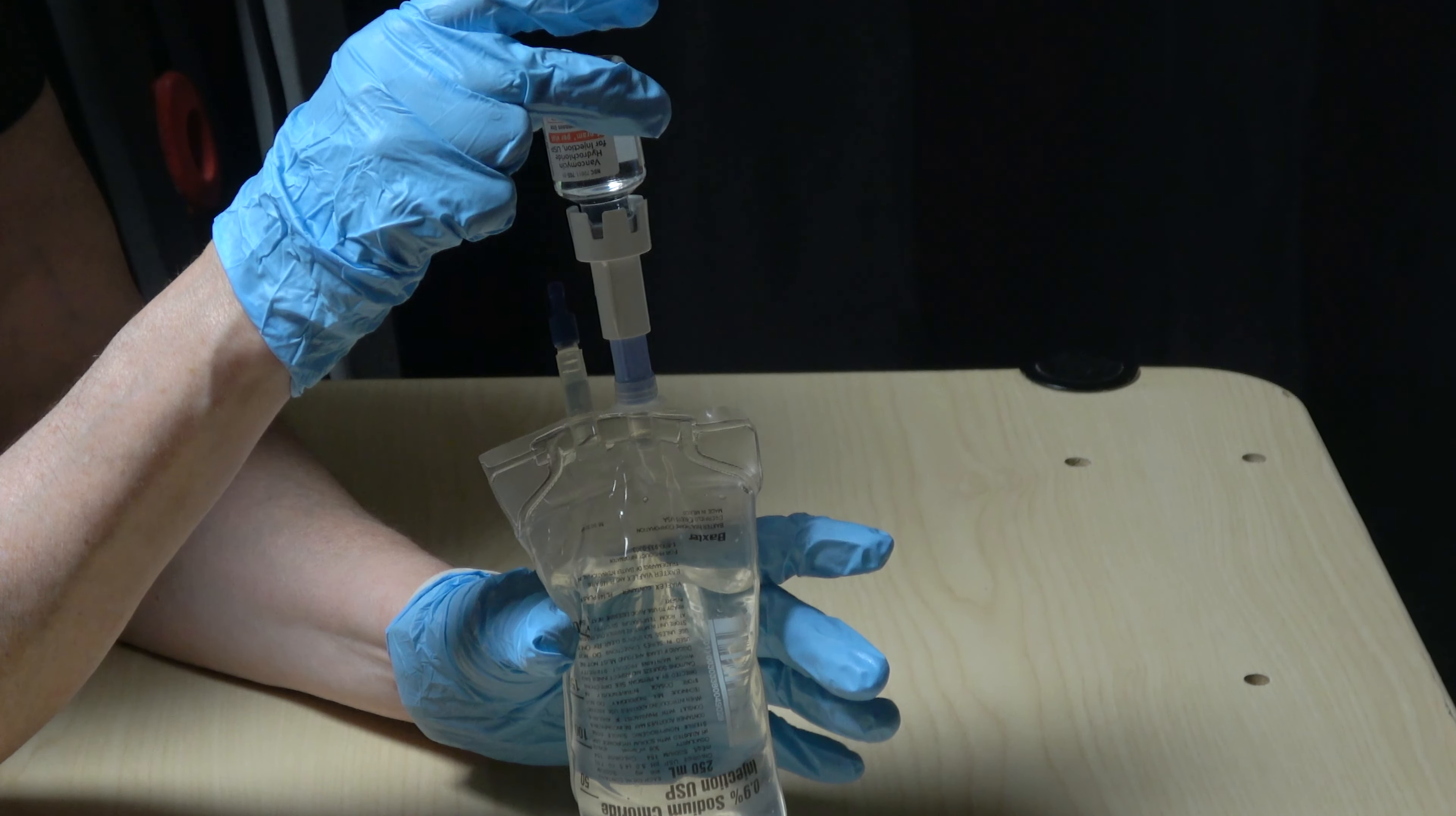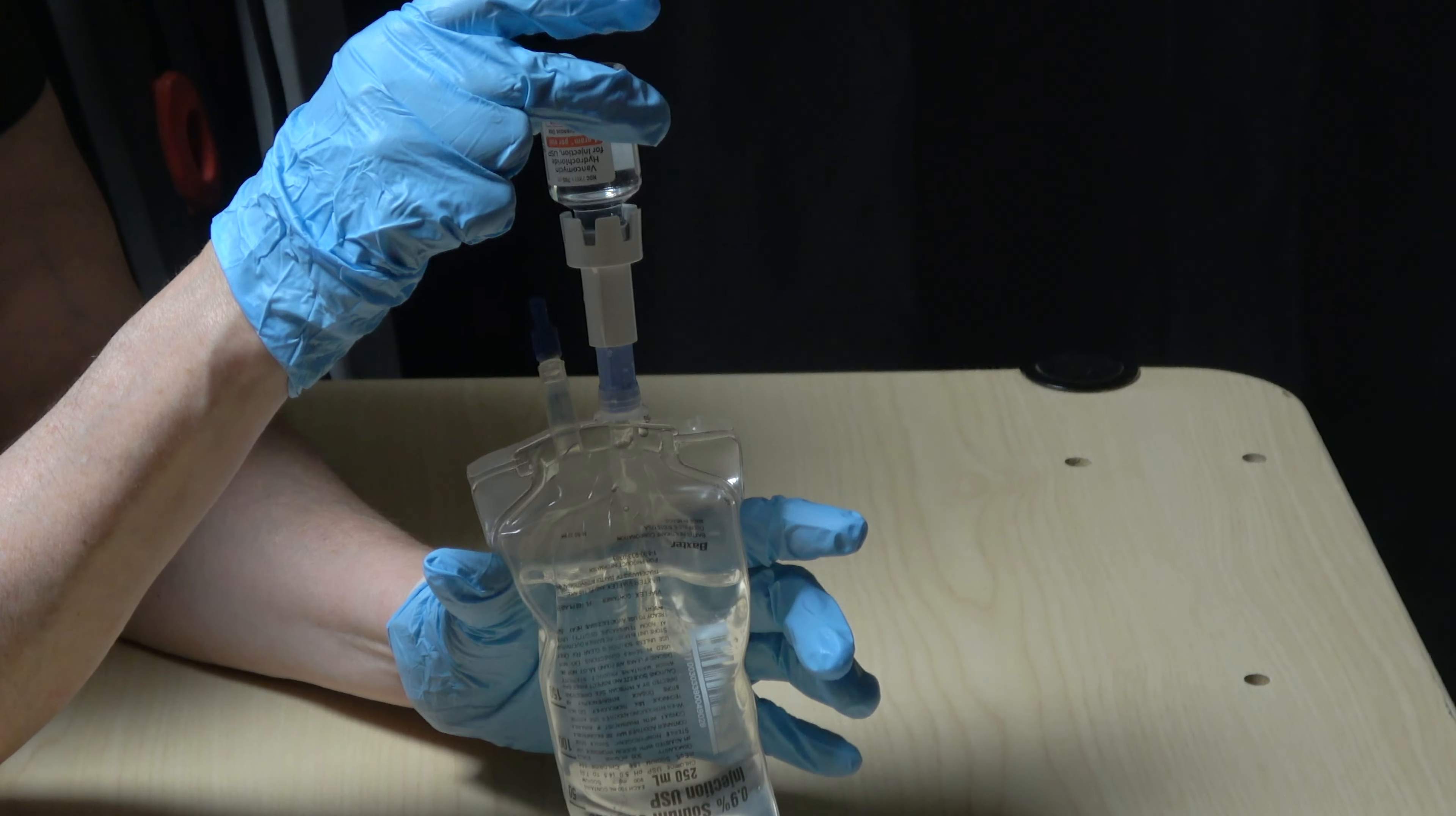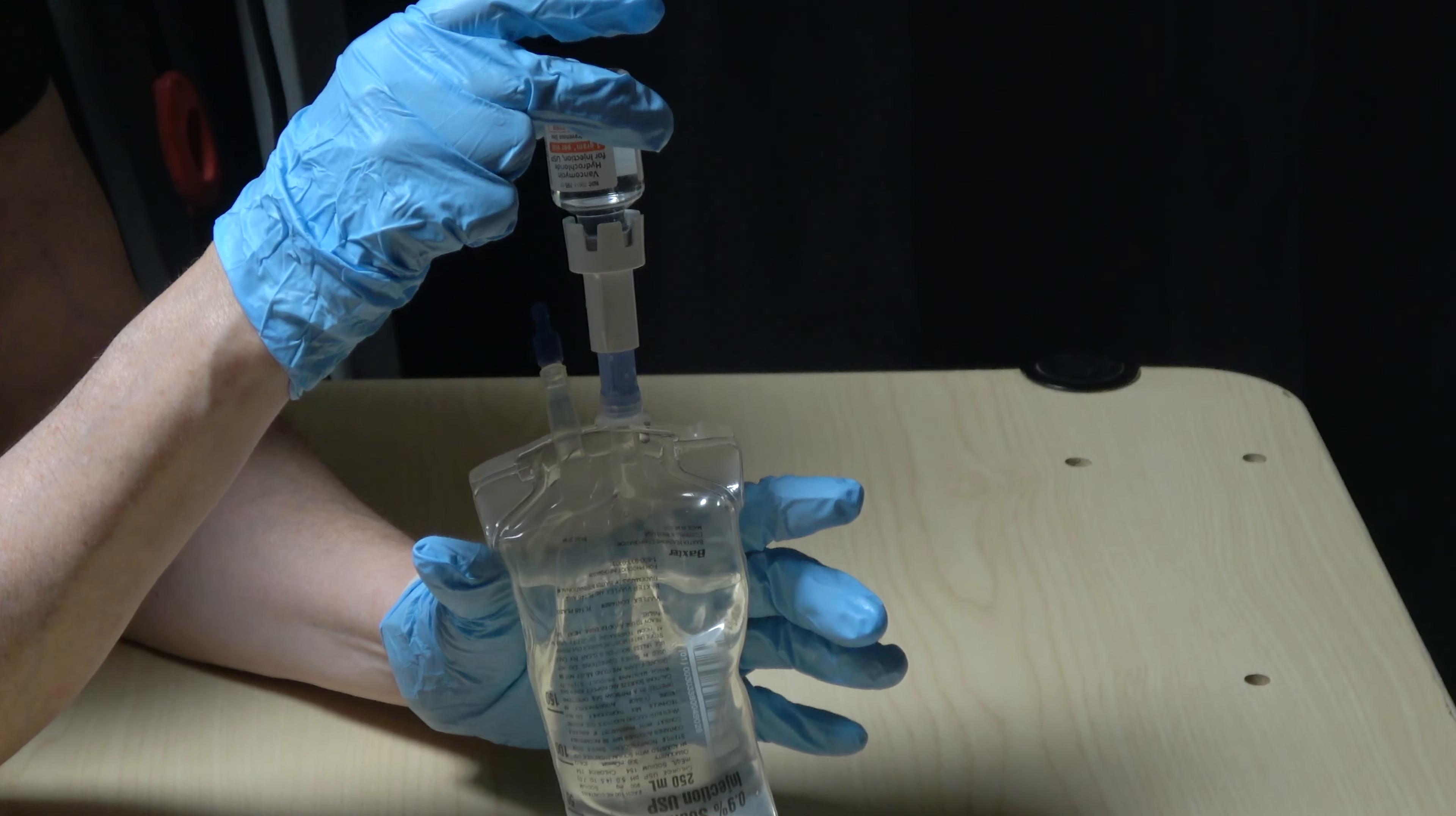Step six: hold the vial of solution upside down and squeeze air from the mini bag into the vial. This will cause the solution to transfer from the vial into the mini bag. Continue squeezing air until all the solution is in the mini bag.